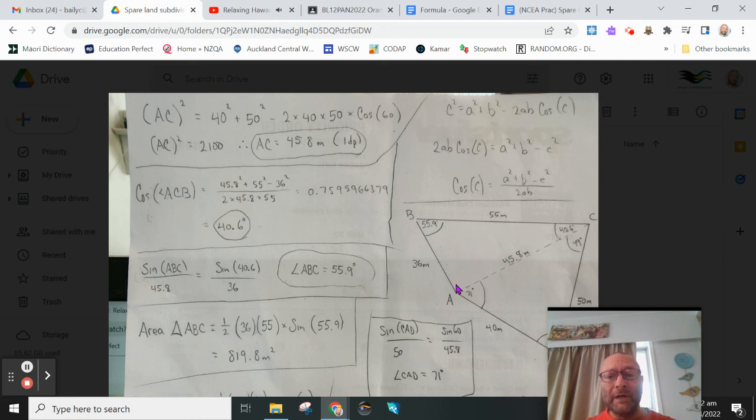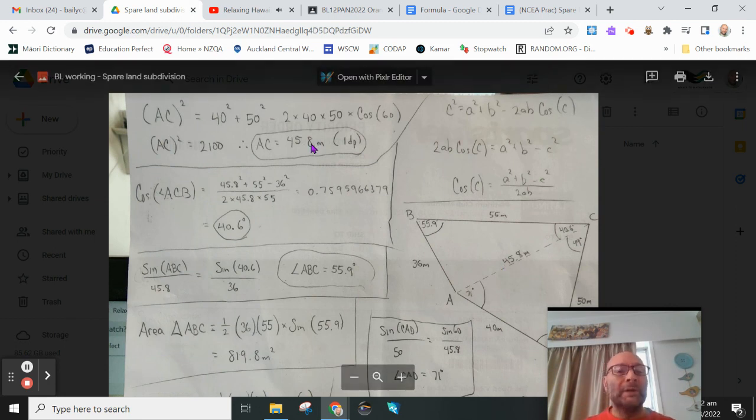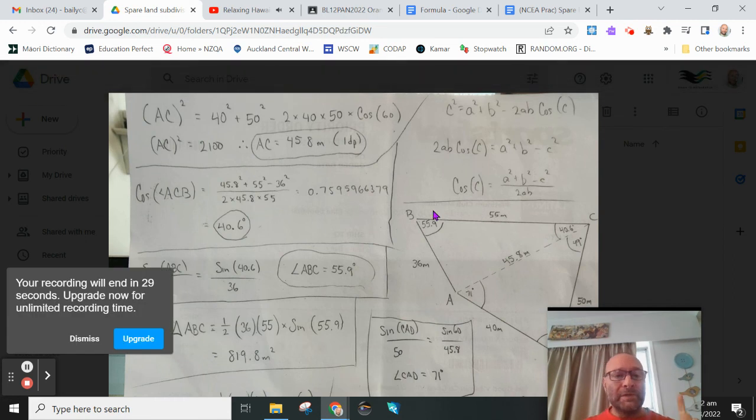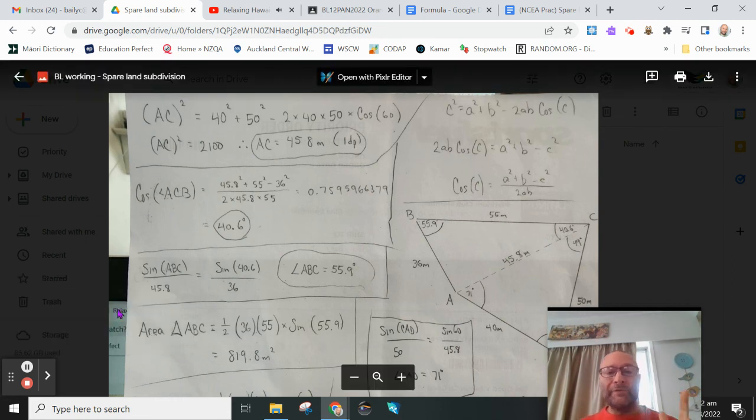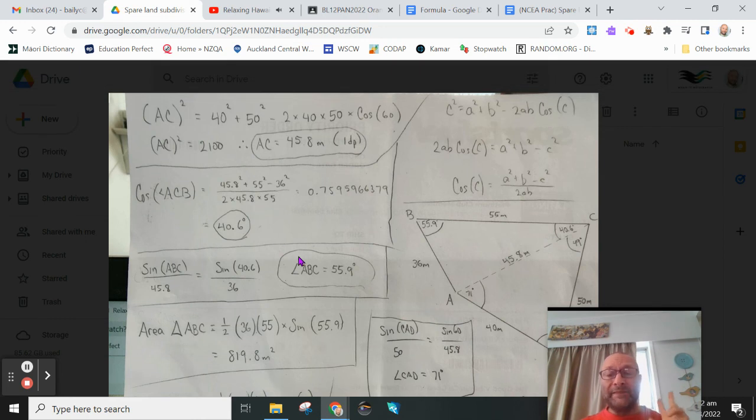For this last one here, you could just subtract those two from 180 or use the sine rule once again. But that is our achieved level right there. Being able to find the length of the pipeline and then show two more skills. We've used the cosine rule to find a side length, we've used the cosine rule to find the measure of an angle, and we've used the sine rule to find the measure of an angle. So as long as you do those three skills, you've got your achieved.